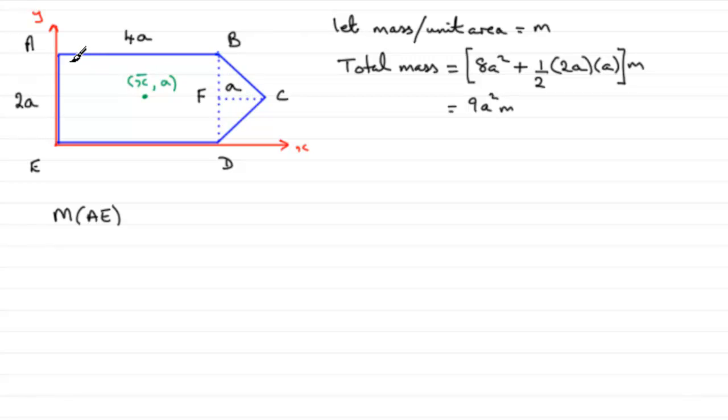Now we're going to need the mass of each of these shapes. We've seen what they are, they're 8A squared, and for the triangle it's going to be A squared. But we also need to mark on where their centre of mass is going to be. So if we take the rectangle ABDE, centre of mass is going to be in the middle. Its coordinates are going to be 2A and then A units up, 2A from this end.